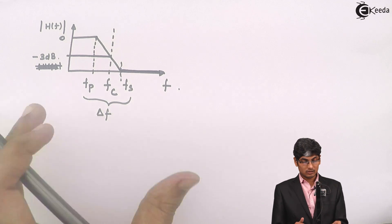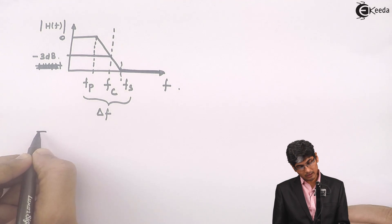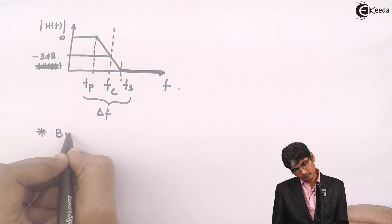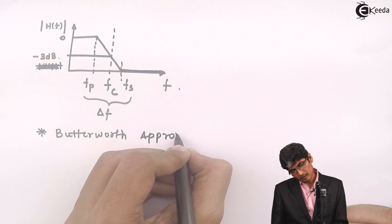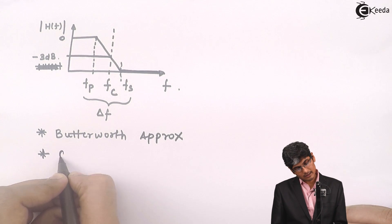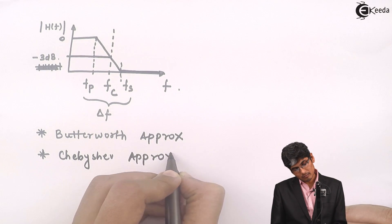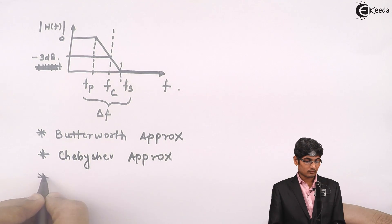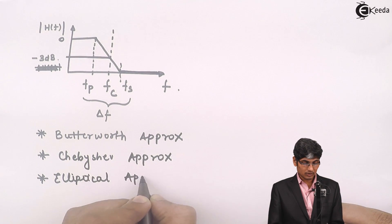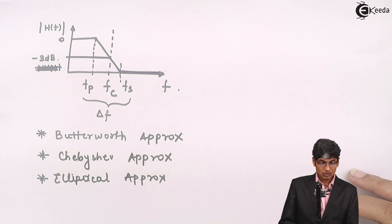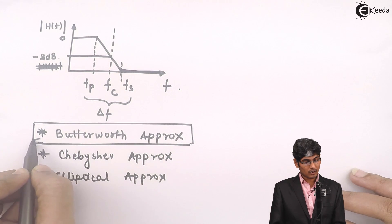Filter approximations are normally done using two basic methods: one is called the Butterworth approximation method and the second is the Chebyshev approximation method. There is one more called the elliptical approximation method. Today we will focus more on the Butterworth approximation method.